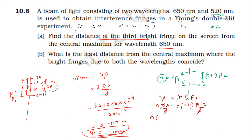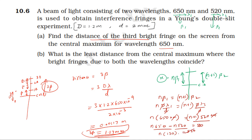Substituting λ₁ = 650 nanometer and λ₂ = 520 nanometer: n × 650 = (n+1) × 520. Expanding: 650n = 520n + 520. So 130n = 520, giving n = 4. The fourth fringe of wavelength 650nm coincides with the fifth fringe of wavelength 520nm.